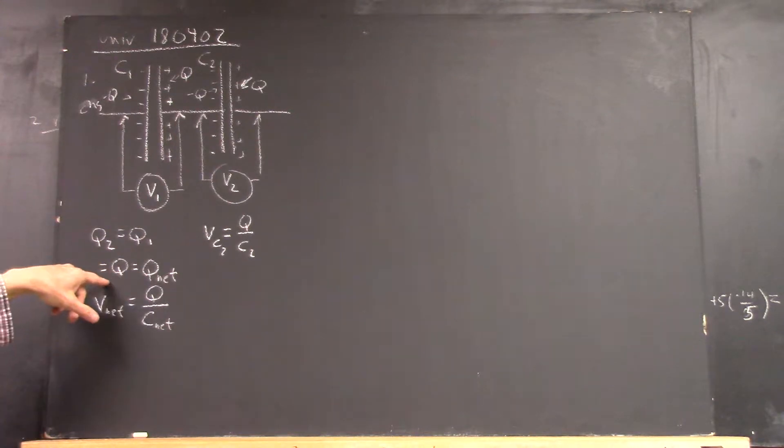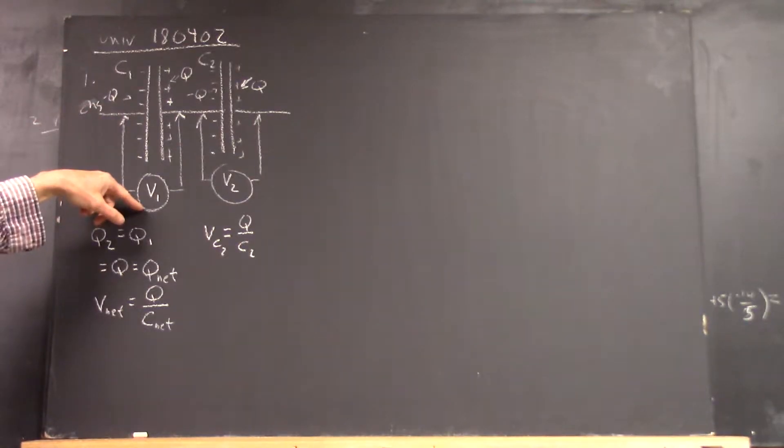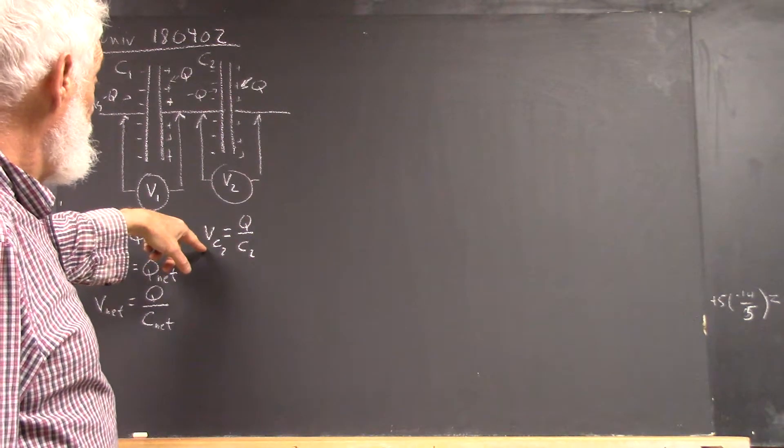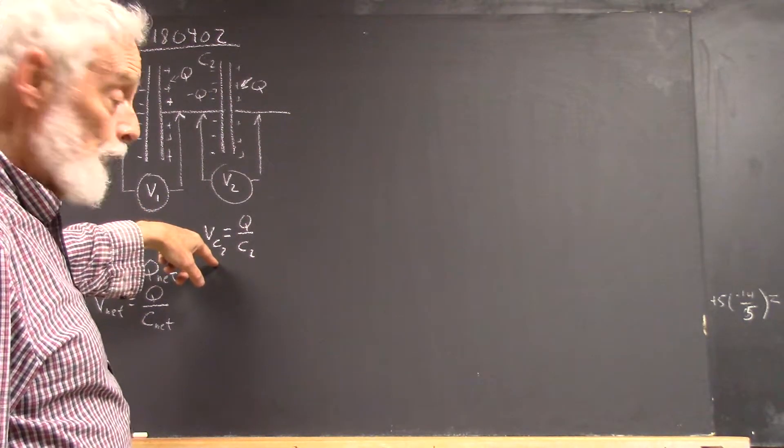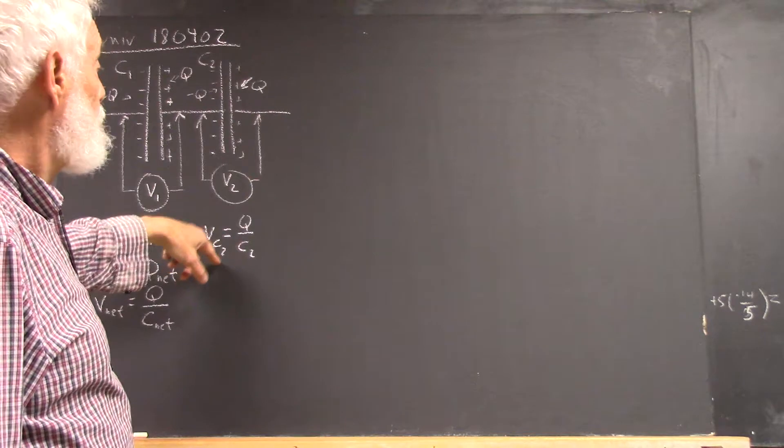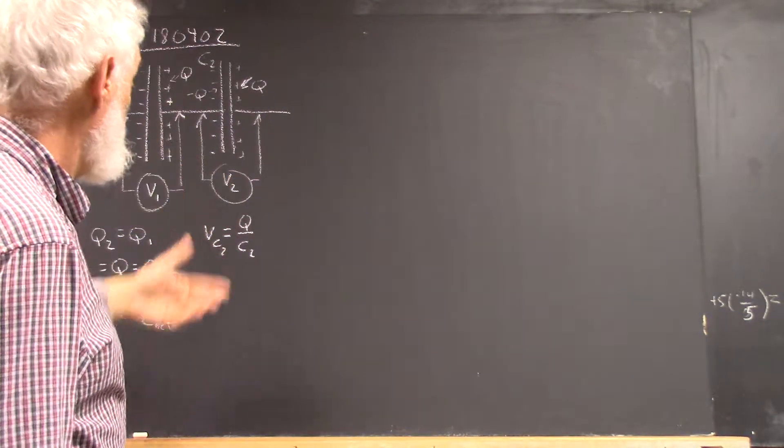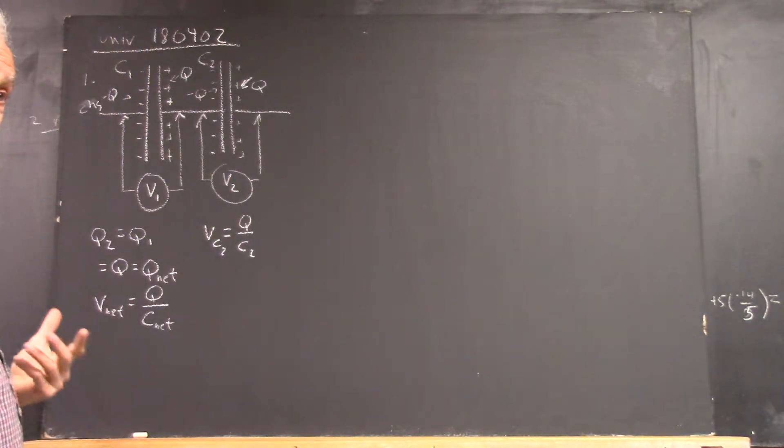Now, we could write Q in terms of C1 and V1. Which means then that we can write the voltage across C2 in terms of Q—well, in terms of C1 and C2 and Q.